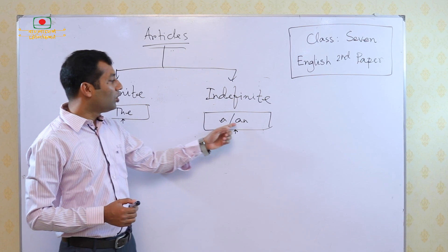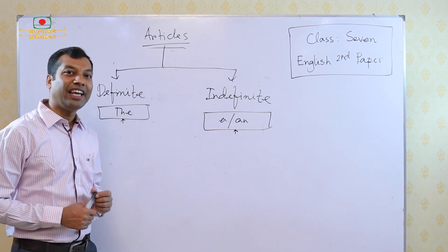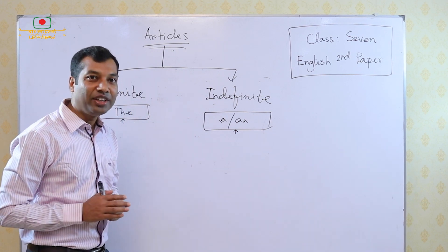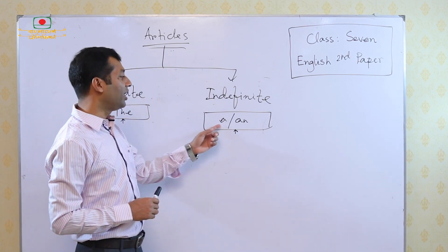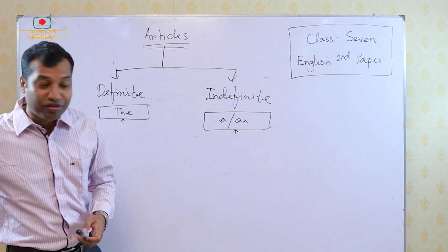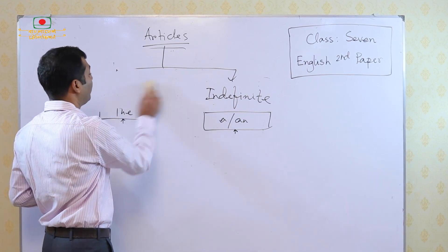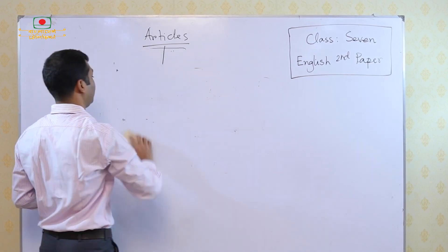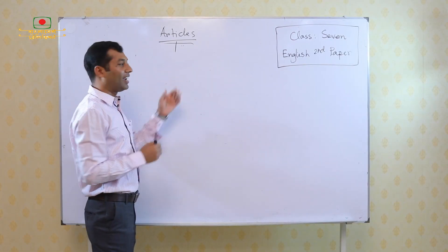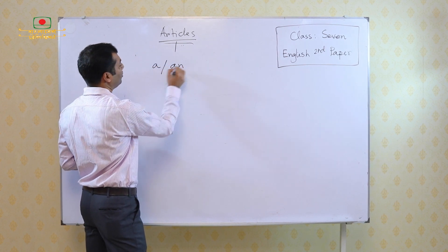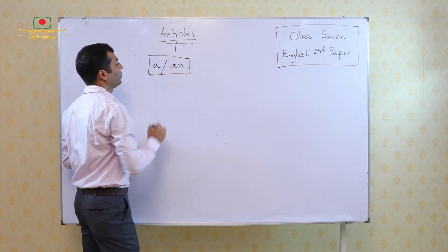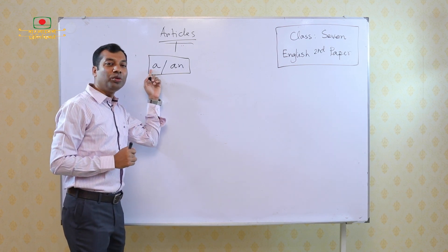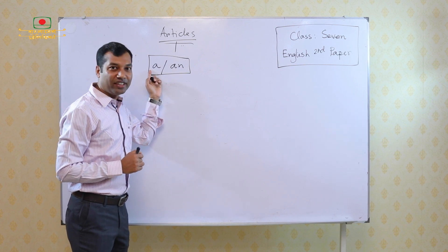These two articles, A and AN, are same in meaning. But they are different in their uses. So at first, we have to learn about the differences in their uses. We usually know that A is used before a consonant sound, and AN is used before a vowel sound.